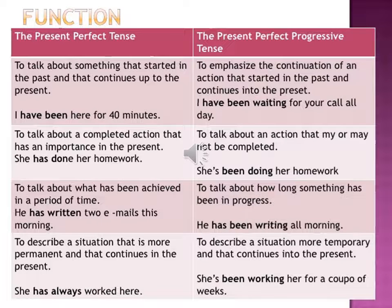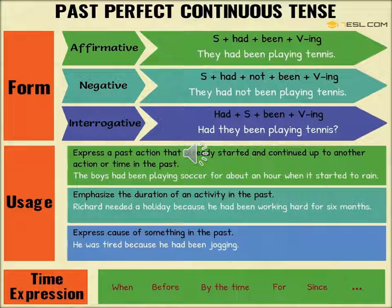The next in the category is Past Perfect Continuous Tense. Past Perfect Continuous Tense is used to express a past action that already started and continued up to another action or time in the past. For example: 'The boys had been playing soccer for about an hour when it started to rain.' It is also used to emphasize the duration of an activity in the past, and to express the cause of something in the past — for example: 'He was tired because he had been jogging.'